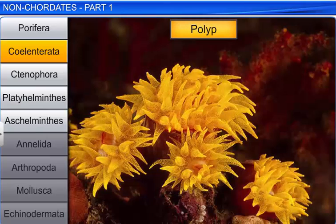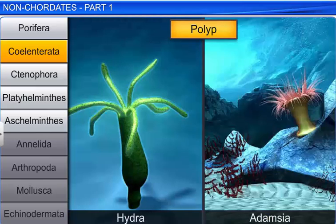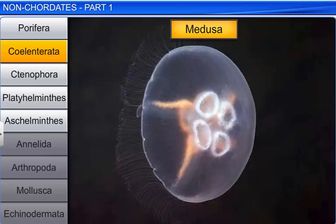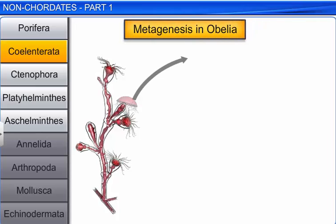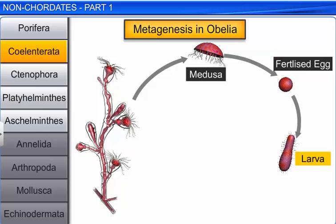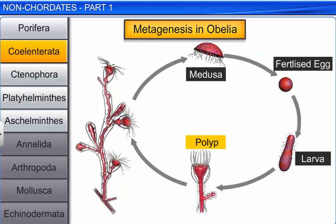Polyp is a sessile and cylindrical form, like Hydra and Adamsia. While medusa is umbrella shaped and free swimming, like Aurelia. Some coelenterates, like Obelia, exist in both forms and exhibit alternation of generation.